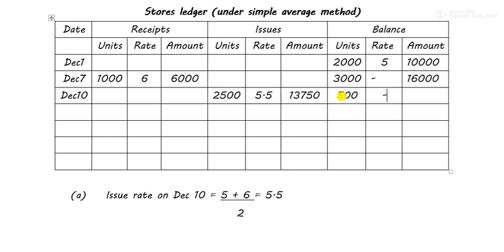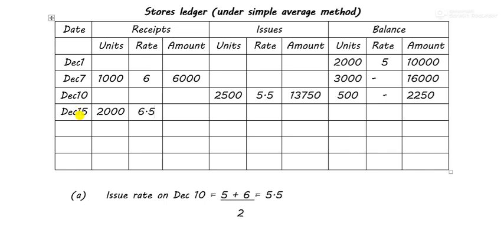For the 500 units in balance, we write no rate in the rate column. The amount is 16,000 − 13,750 = ₹2,250. The next date is December 15 — 2000 units purchased at ₹6.5, which equals ₹13,000. So the new balance is 2500 units, rate blank, and amount = 13,000 + 2,250 = ₹15,250.